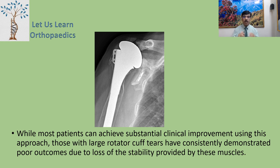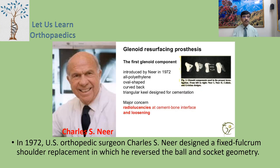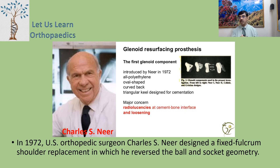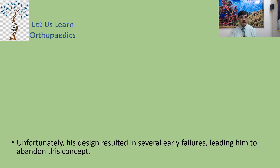While most patients can achieve substantial clinical improvement using the anatomic approach, those with large rotator cuff tears have consistently demonstrated poor outcomes due to loss of stability provided by these muscles — as seen in this x-ray showing superior migration of the humeral implant. In 1972, US orthopedic surgeon Charles S. Neer designed a fixed fulcrum shoulder replacement reversing the ball and socket geometry, but unfortunately his design resulted in several early failures, leading him to abandon the concept.